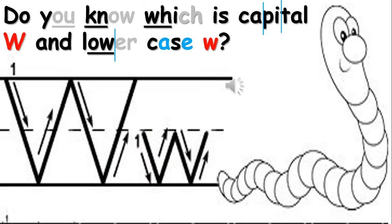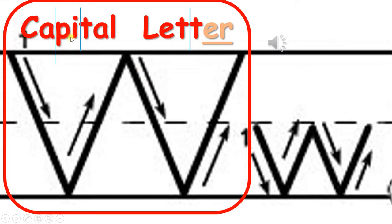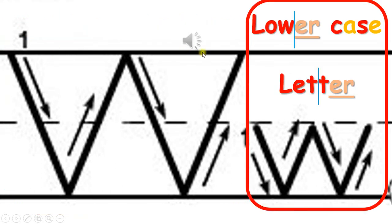Do you know which is capital W and lowercase w? The big W is called capital letter W. The small w is called lowercase w.